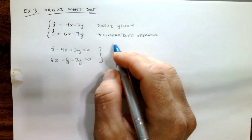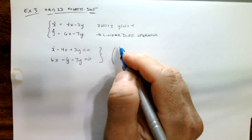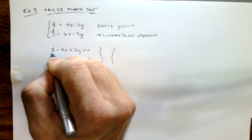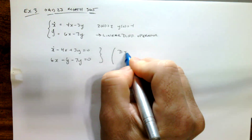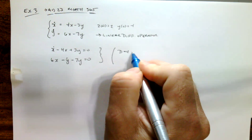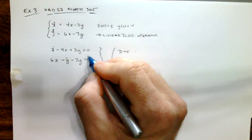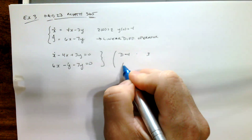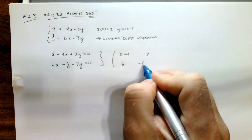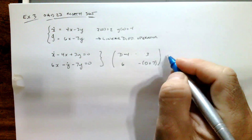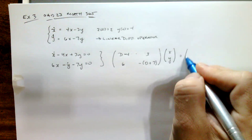In the differential notation operator, think of it as factoring out x from this term. There's an operator that's going to operate on x as it distributes through. This becomes (D minus 4) multiplied component-wise in the matrix by x. Then I have a plus 3, a 3 there, and then a 6 located here. Factoring out the y term gives a negative (D plus 7) for that component, multiplied by x and y, equal to 0 and 0 for the homogeneous system.